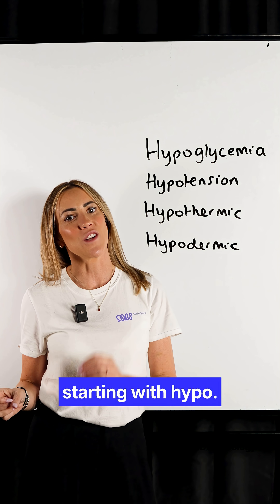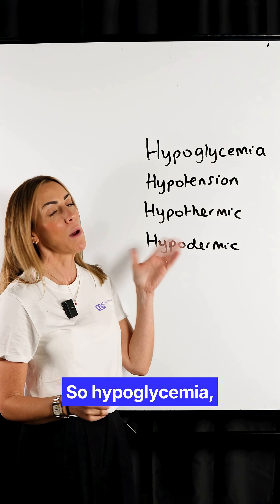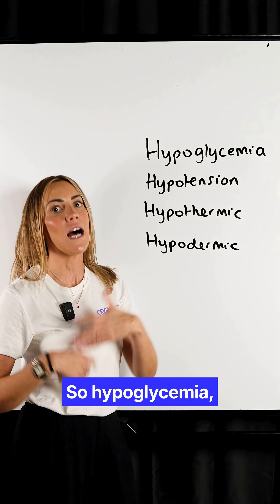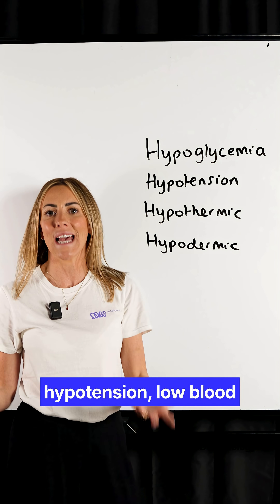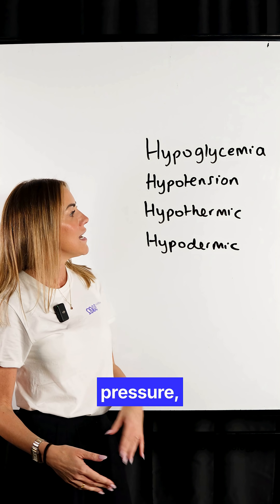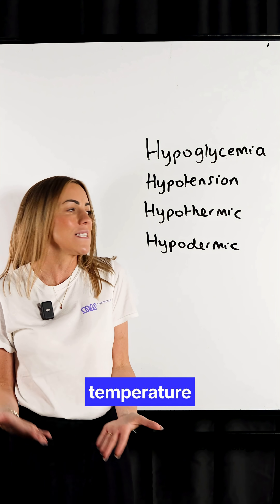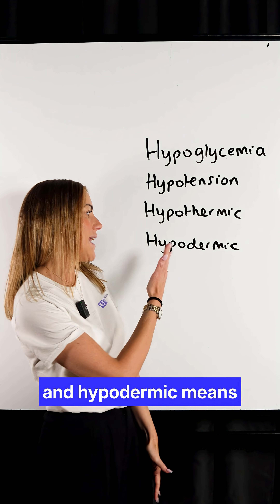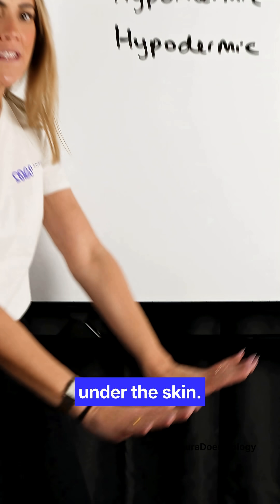Here are some terms starting with hypo. Hypoglycemia — low blood sugar. Hypotension — low blood pressure. Hypothermic — low body temperature. And hypodermic means under the skin.